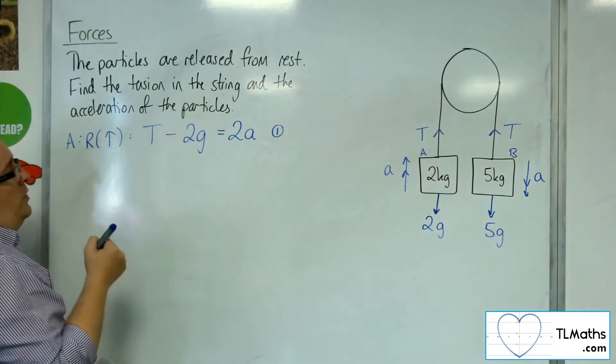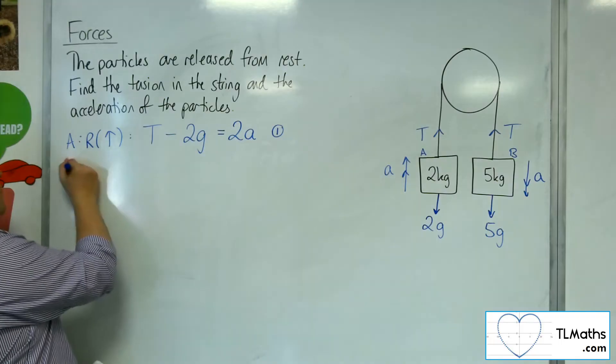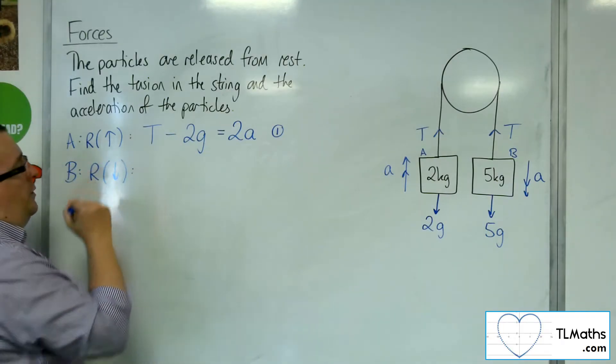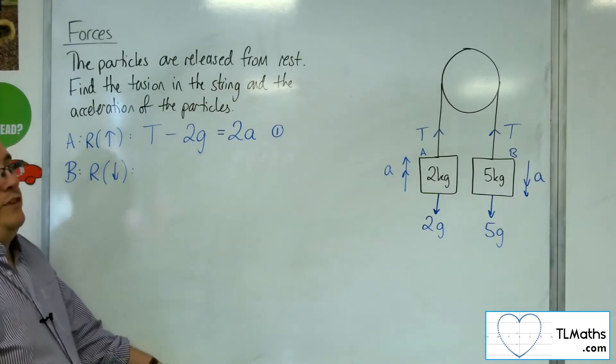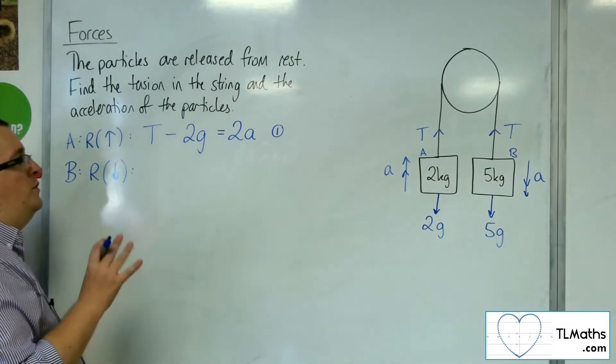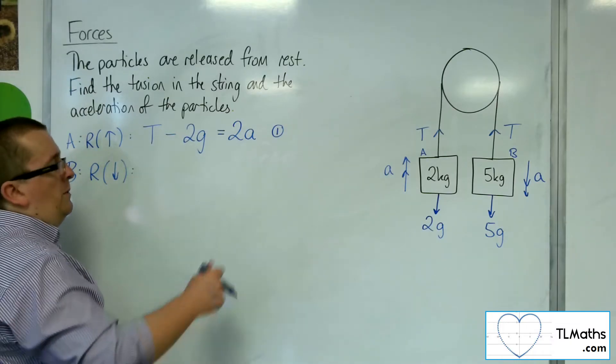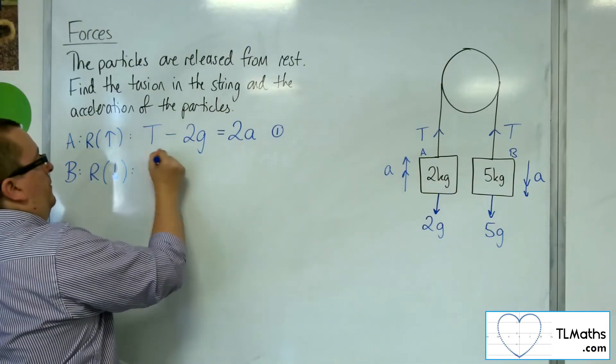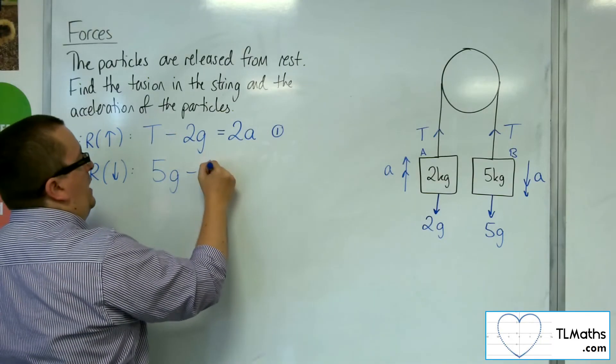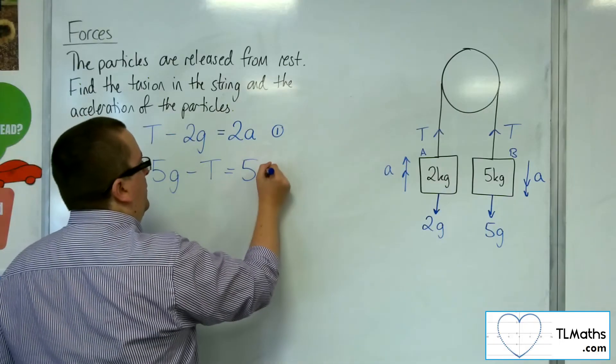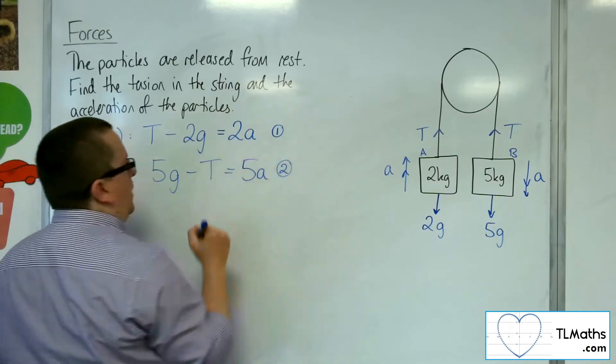Then I've got equation number 2 from B, and I'm going to resolve this time taking downwards as positive. In these types of problems, take the direction of acceleration as positive. It'll help you no end. So I'm going to take downwards as positive. So I've got 5g working downwards, I've got T working upwards, and that's got to be equal to the mass times the acceleration. And there's your equation number 2.